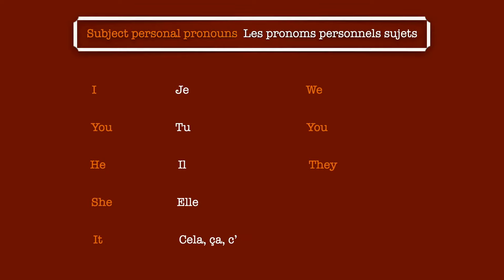I'm not going to speak a lot about the subject personal pronoun 'it' in this video, because I will make dedicated videos that deal about this pronoun and other aspects, but just for you to know, there are several translations which are 'cela,' 'ça,' 'c'est.' Now, we are going to move on to the plural subject personal pronouns, and we start by 'we,' which is 'nous.'